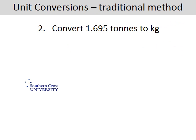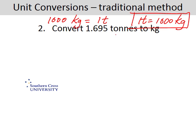Next question: convert 1.695 tonnes to kilograms. You could see this conversion written as 1,000 kilograms is equal to 1 tonne, or 1 tonne is equal to 1,000 kilograms. We want this version because in the question we're going from tonnes to kilos. To go from tonnes to kilos we've gone from 1 to 1,000, which means times by 1,000.